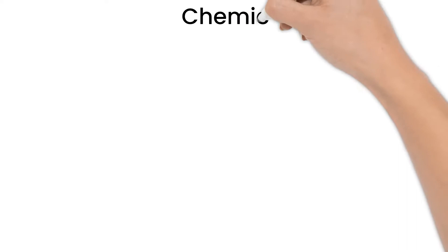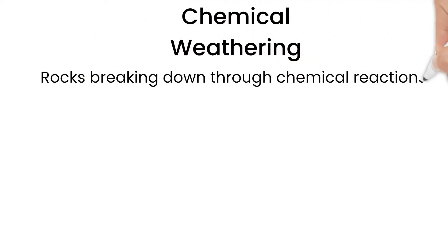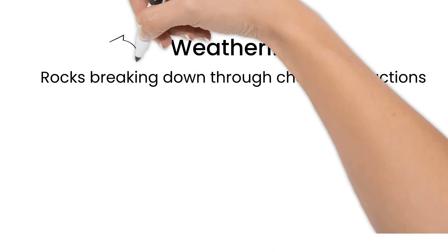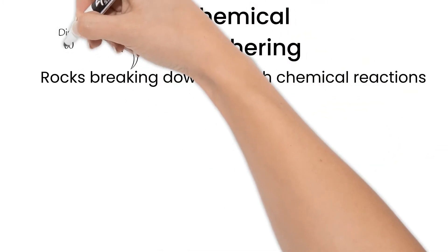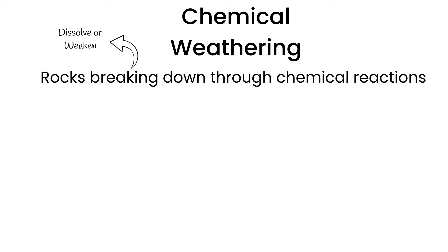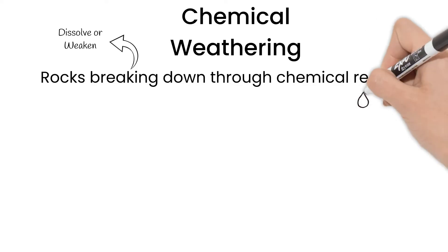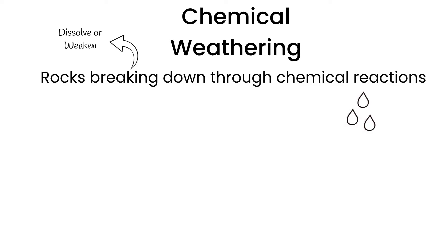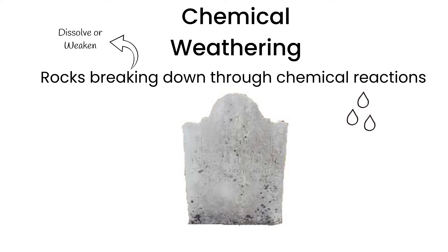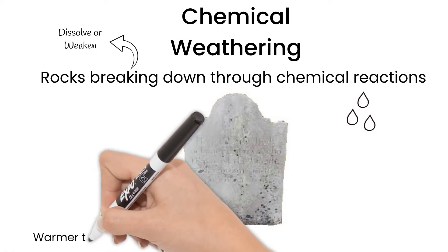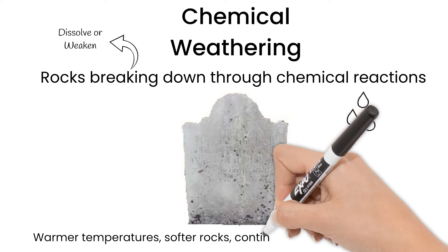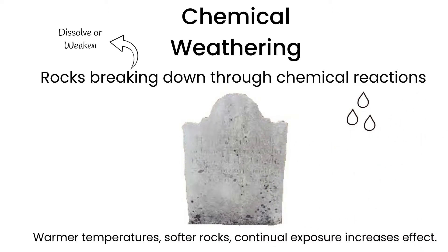Chemical weathering breaks down rocks through chemical reactions. Some rock material may dissolve while others are weakened by the chemical reactions. Rain is always slightly acidic, and in some places, because of pollution, it can be even more acidic than usual. Acid rain often discolors and dissolves parts of rocks. Warmer temperatures, softer rocks, and continual exposure over time increase chemical weathering effects.